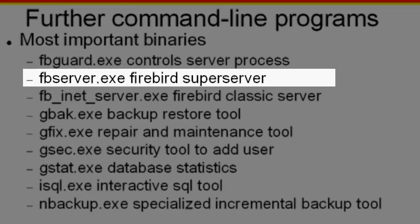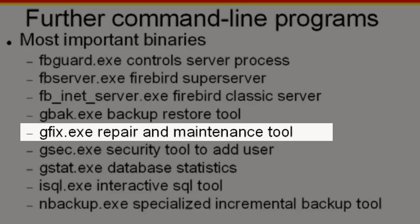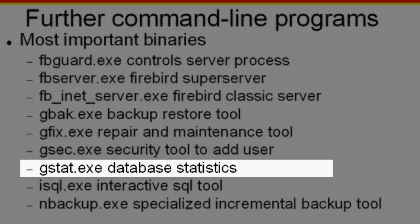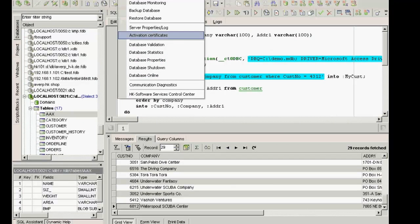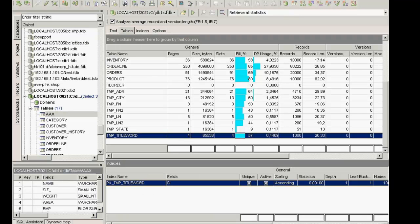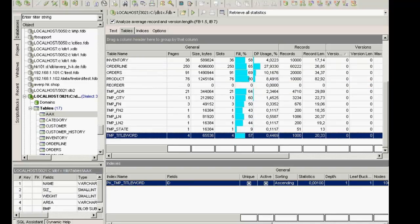FB Server is the Firebird super server binary. FB Inet Server is the Firebird classic server binary. GBAK is the backup and restore tool. GFIX is the repair and maintenance tool. GSEC is the command line security tool to add, modify, and delete authorized users. GSTAT is the statistics tool at command line level. We took a look at the statistics tool in an earlier tutorial using IB Expert, which displays a tabular summary of all tables, indices, etc., allowing you to see which tables are the largest and analyze how many record versions are there in the most commonly used tables.